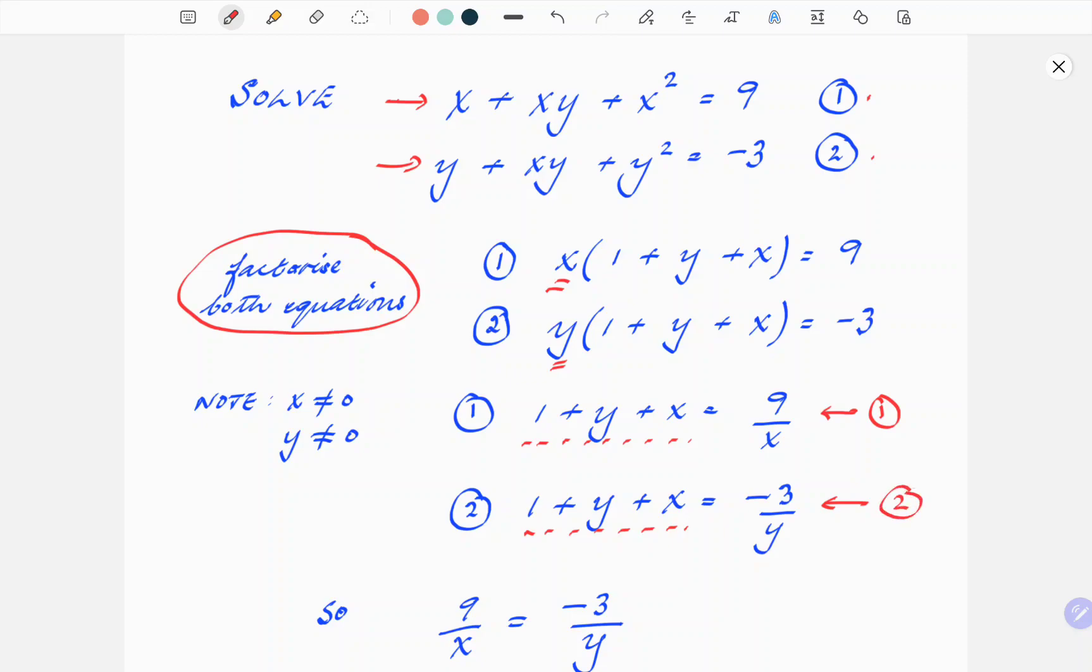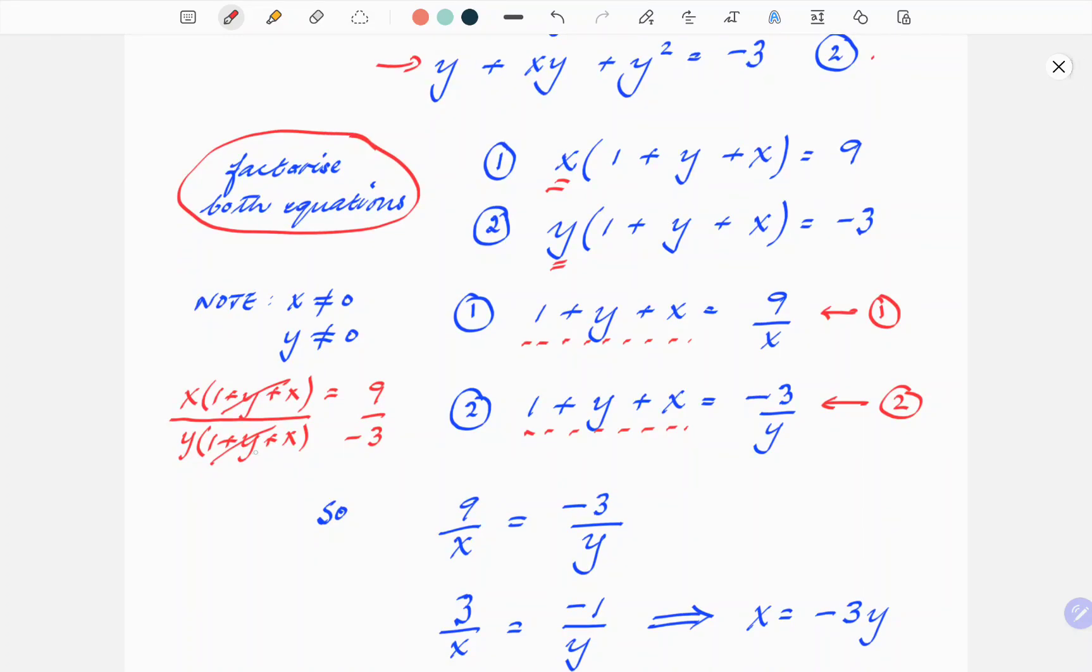Now, I could have done that differently. I'll just take a moment out of the solution to show you. What I could have done here is divided the two equations like this, writing it as a quotient and having this result. As you can see, if I do it like that, I can actually cancel the 1 plus y plus x directly. And whichever way you do it, it will result in the same solution there.